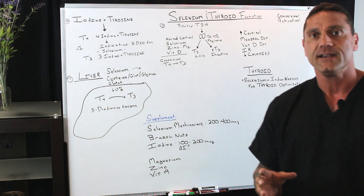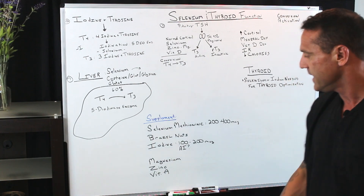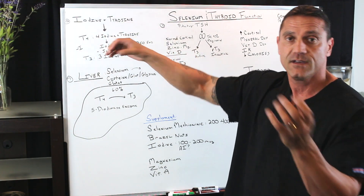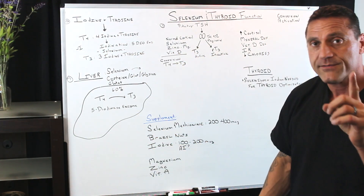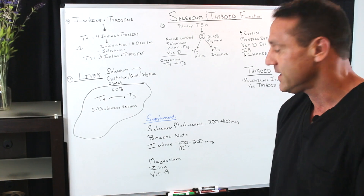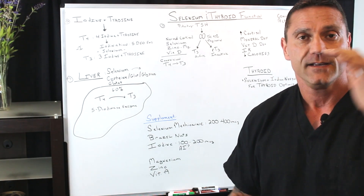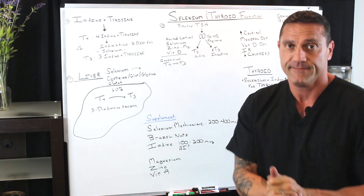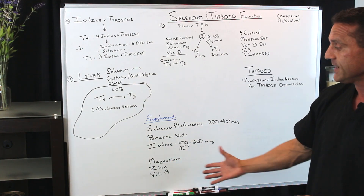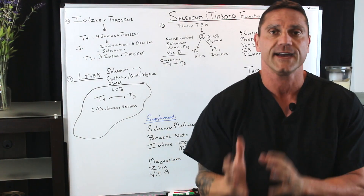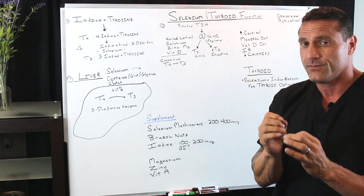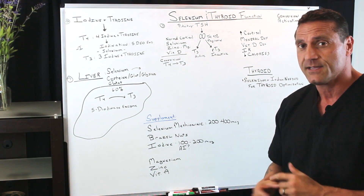Iodine — you want to take in small amounts, anywhere from 100 to 200 micrograms a day, because you're going to supply the necessary ingredients to make thyroid hormone. However, if you have an autoimmune disease or hyperthyroid, stay away from iodine. Magnesium is another supplement to take, along with zinc and vitamin A. Taking all these will help boost your thyroid function. If you have hypothyroid, check your selenium levels first.